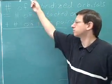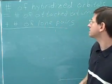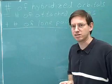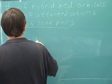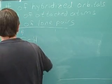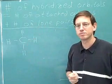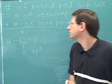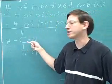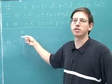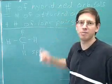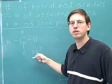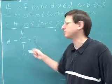Let's review how to use the hybridization rule and then go over the exception. For a carbon with four attached hydrogen atoms and zero lone pairs, 4 plus 0 equals 4, so we need four hybridized orbitals. sp3 means we have one s orbital and three p orbitals — four hybridized orbitals overall. So this carbon is sp3.